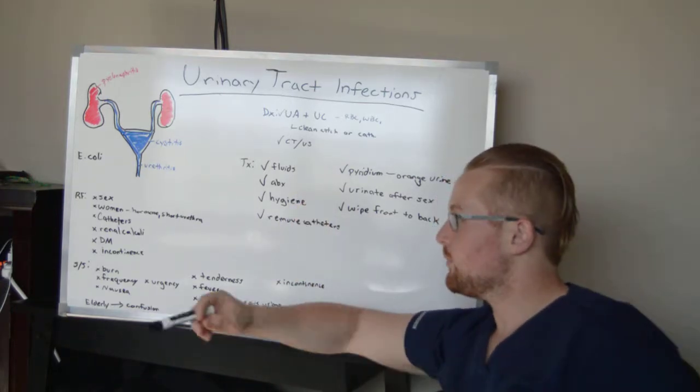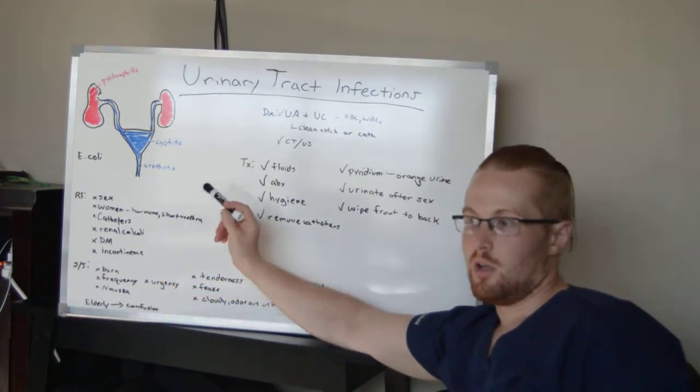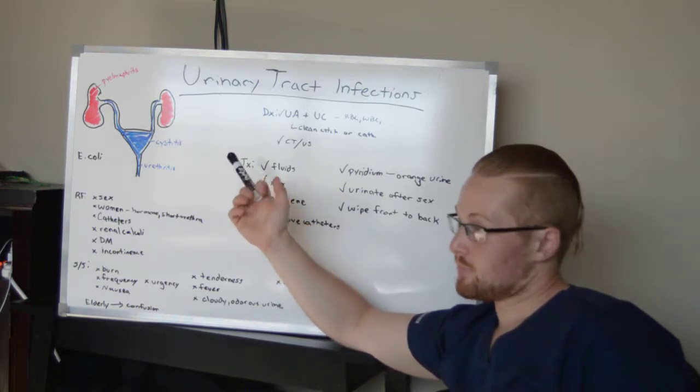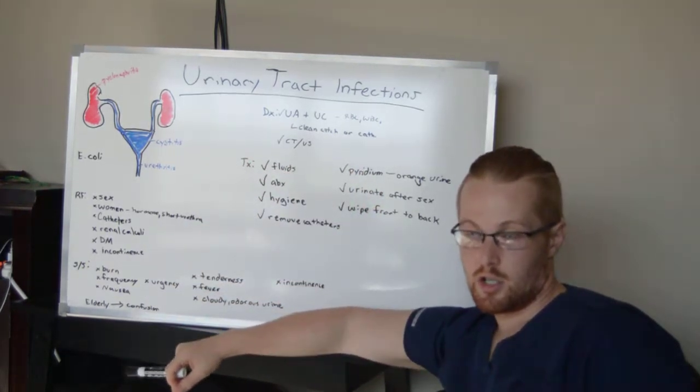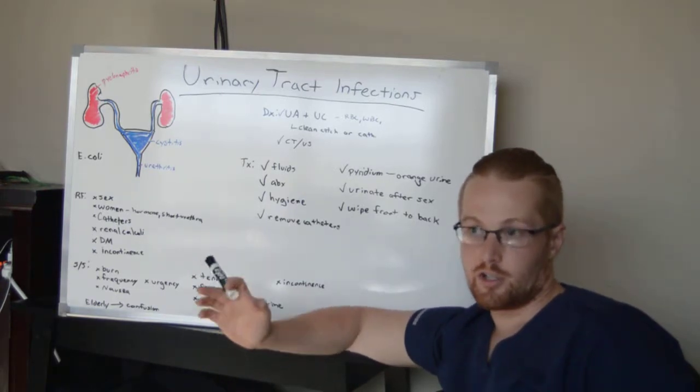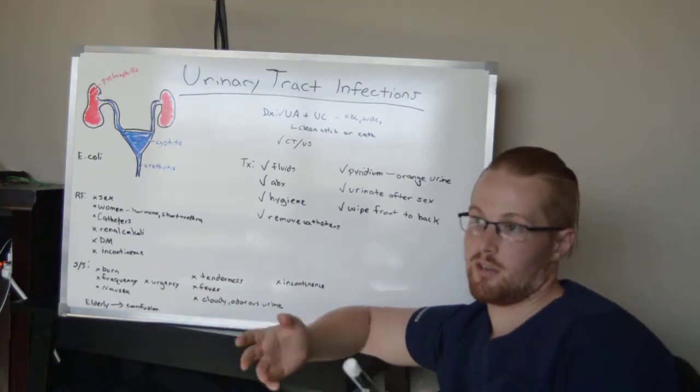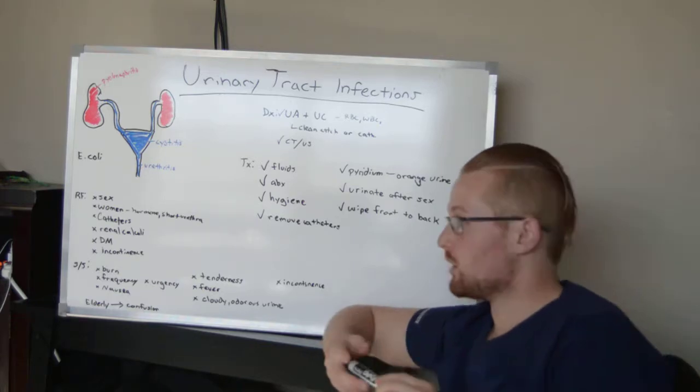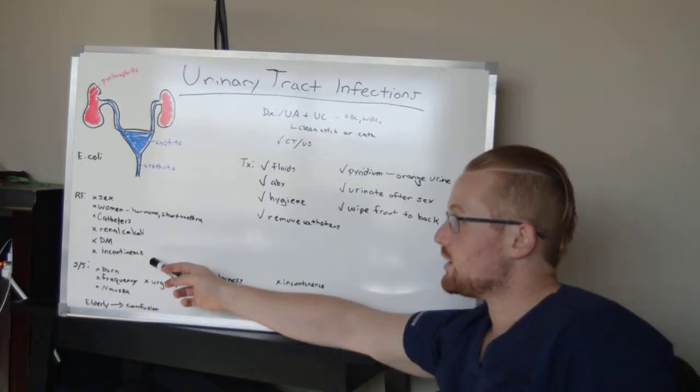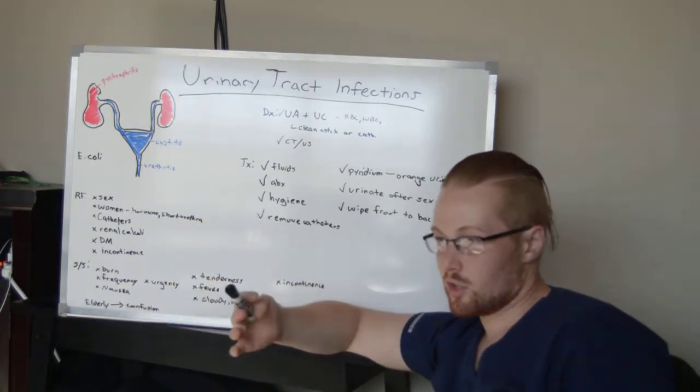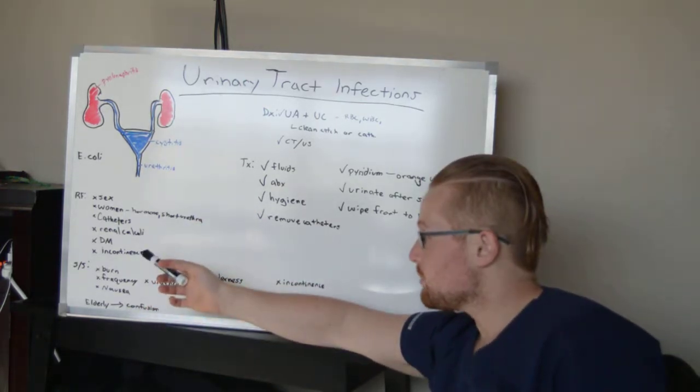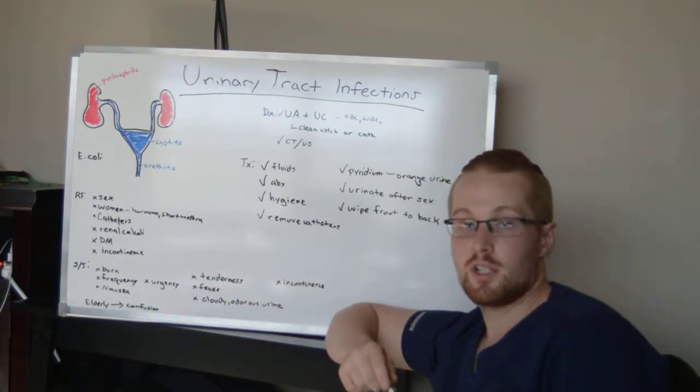Diabetes mellitus is a risk factor because of an increased amount of sugar being peed out in the urine, and bacteria like sugar, so they have an increased amount of sugar in the urine. Also, incontinence—this being stool bowel incontinence—if you have feces all over your urethral opening or meatus, then some of it's going to get in there.